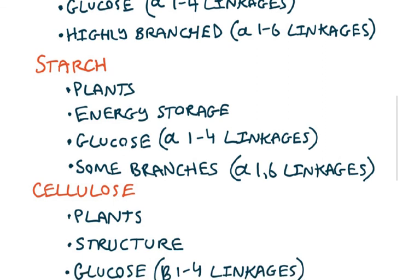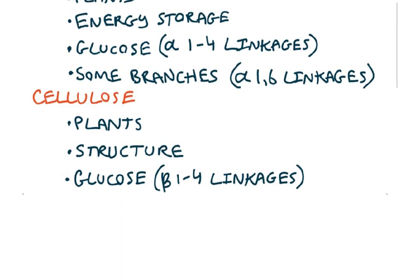The other one in plants is called cellulose. And cellulose is used not as energy storage, but as a structural thing. It's a fiber. It's also a polymer of glucose, but it's different because it has beta-1,4 linkages.